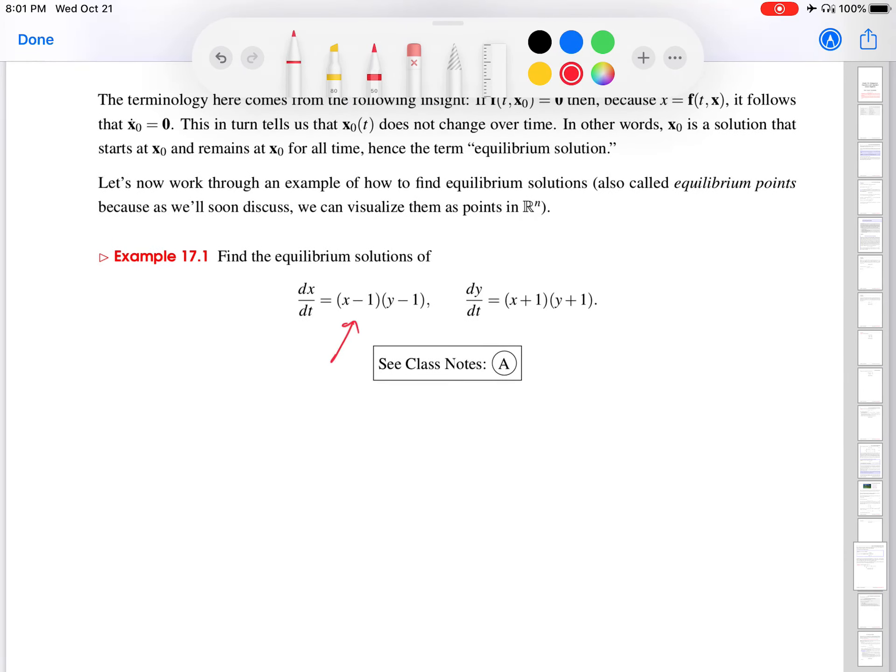In other words, X equals one might seem like part of the equilibrium solutions, but the problem there is that at X equals one, dx/dt equals zero, great, but dy/dt, look up here, is not equal to zero. At X equals one, I have two here times Y plus one, so it might be equal to zero depending on the Y value, but in general it's not. So I shouldn't find equilibrium solutions that way. I'm going to show you an easier way.